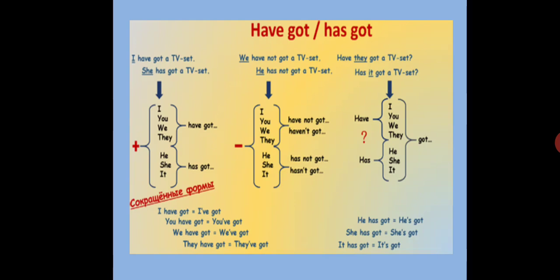Negative sentence: I have not got, you have not got, we have not got, they have not got. In contracted form, have not got becomes haven't got. In the third person with he, she, it, has not got, or in contracted form, hasn't got.